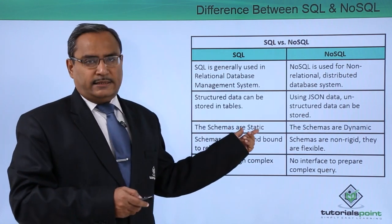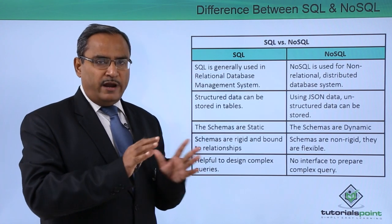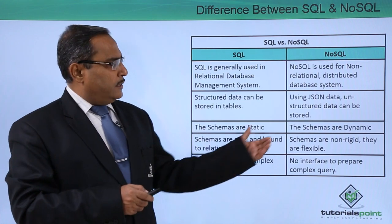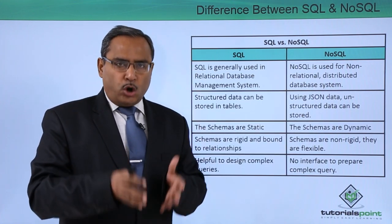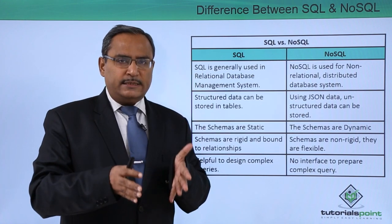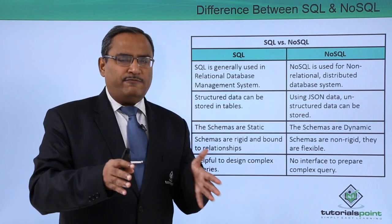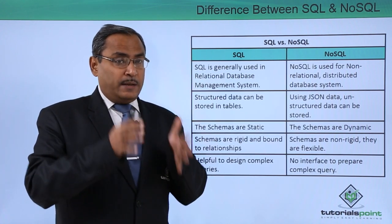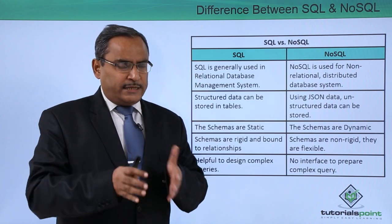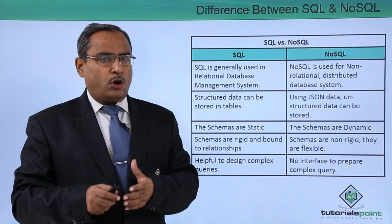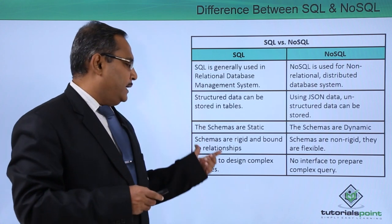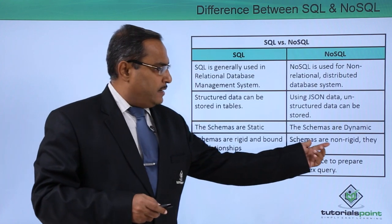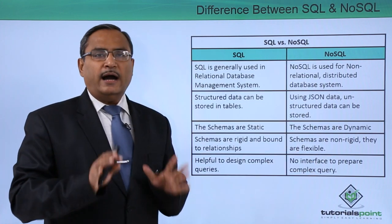In SQL, schemas are static — there is no variability in the schemas. In NoSQL, schemas are dynamic. For example, MongoDB is a cross-platform, document-oriented database where a database has collections, collections have multiple documents, and those documents may have variable structure. So in SQL schemas are rigid and bound to relationships, whereas in NoSQL schemas are non-rigid and flexible.